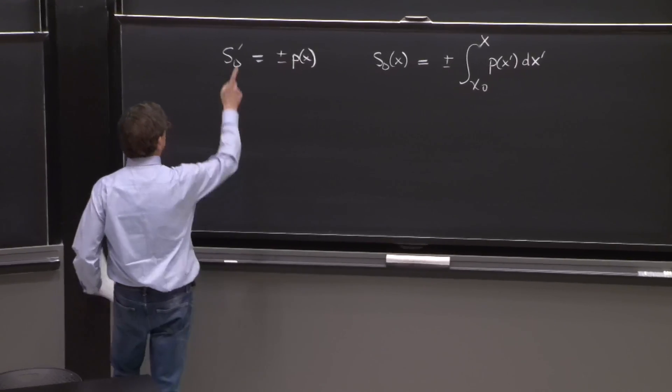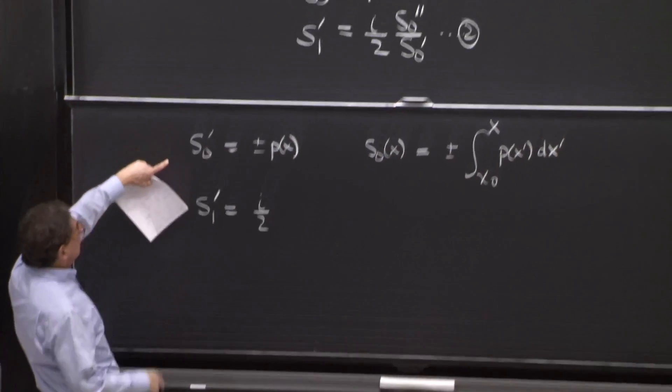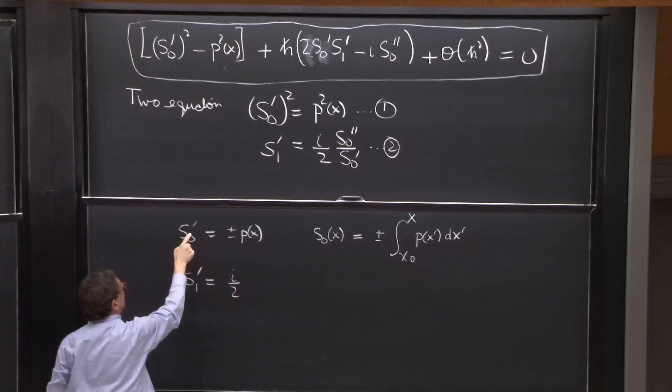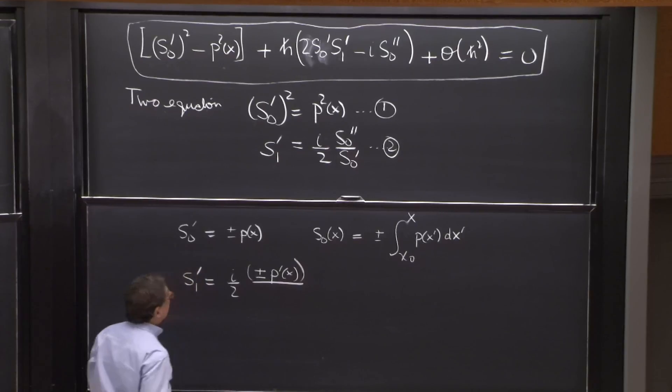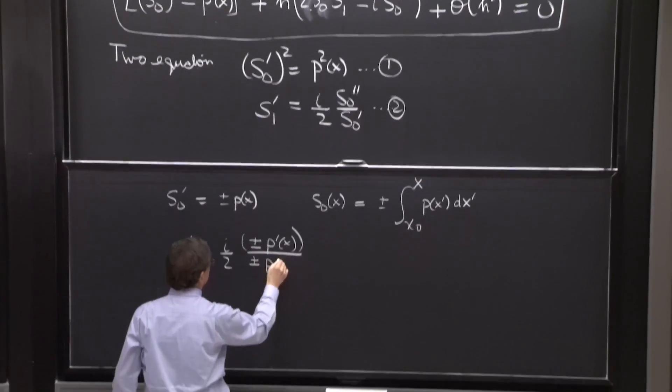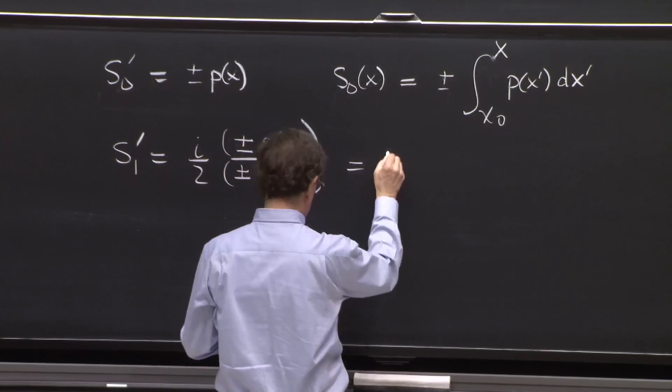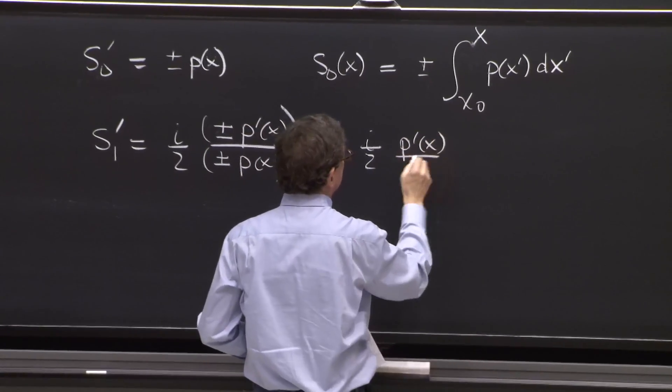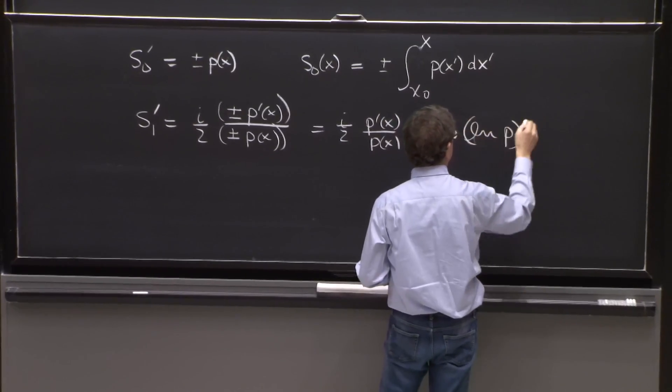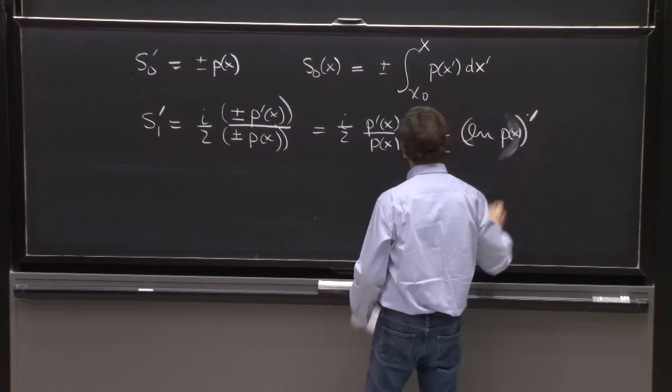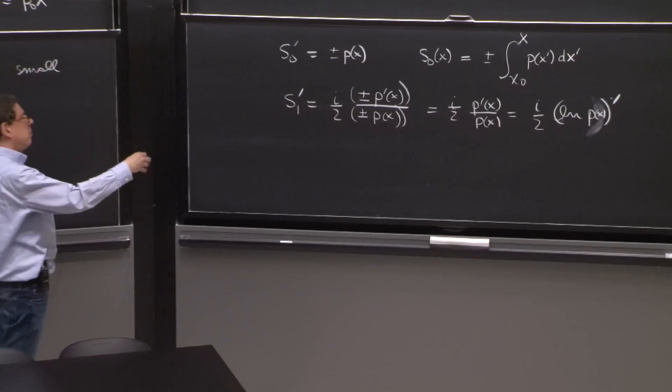Now we look at the second equation. So s1 prime is equal to i over 2 s0 double prime. If you have s0 double prime, you have here s0 prime. So you take another derivative. So that's plus minus p prime of x divided by s0 prime, which is plus minus p of x. That's kind of nice. The sign is going to cancel. So we have here i over 2, p prime of x over p of x, or i over 2 logarithm of p, p of x prime. The derivative of the logarithm is 1 over the function. And then by chain rule, you get the p prime there.